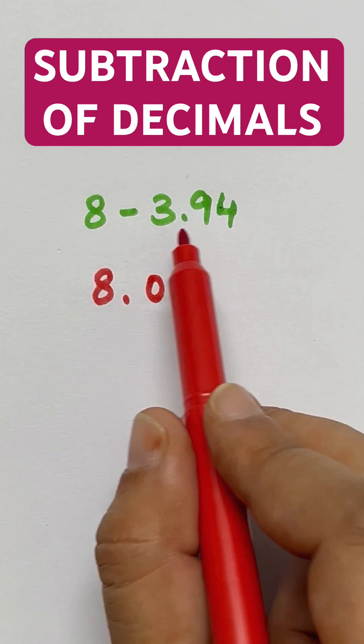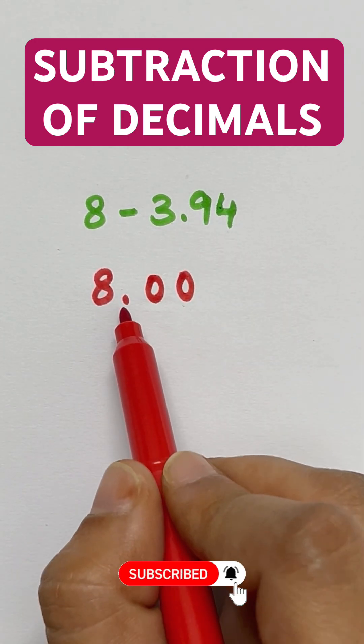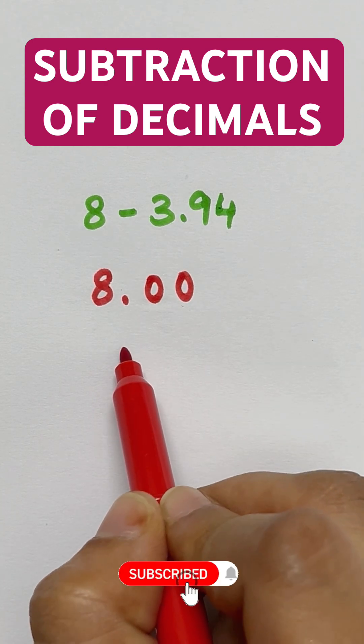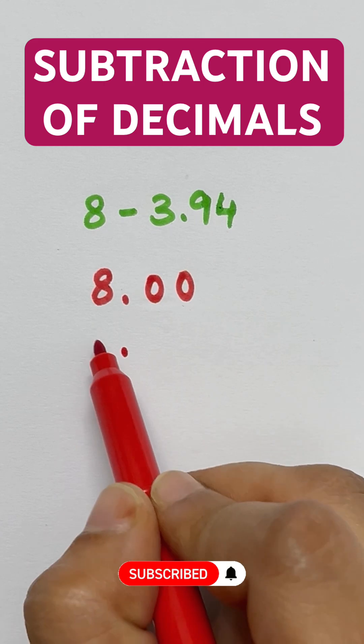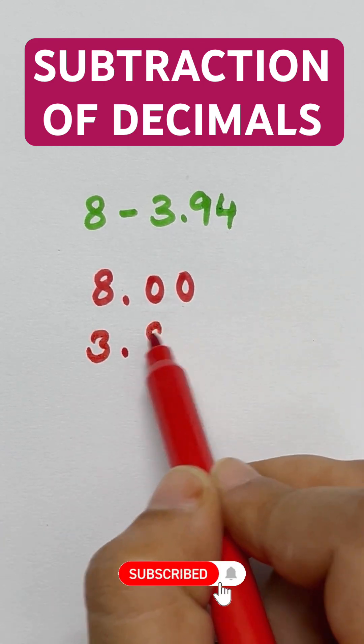After arranging this, we will arrange this number 3.94. Below this decimal point, we will put a decimal point. On the left side of the decimal point 3 and on the right side 9, 4.